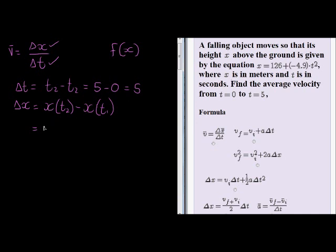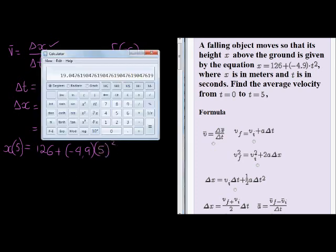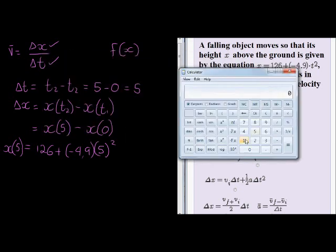Let's start with x substituting 5. When we substitute 5 in here we get 126 + (-4.9)t², in this case is 5 squared. Let's work that out with our calculator. We have 126 + (-4.9) times 5 squared, that gives answer of 3.5.